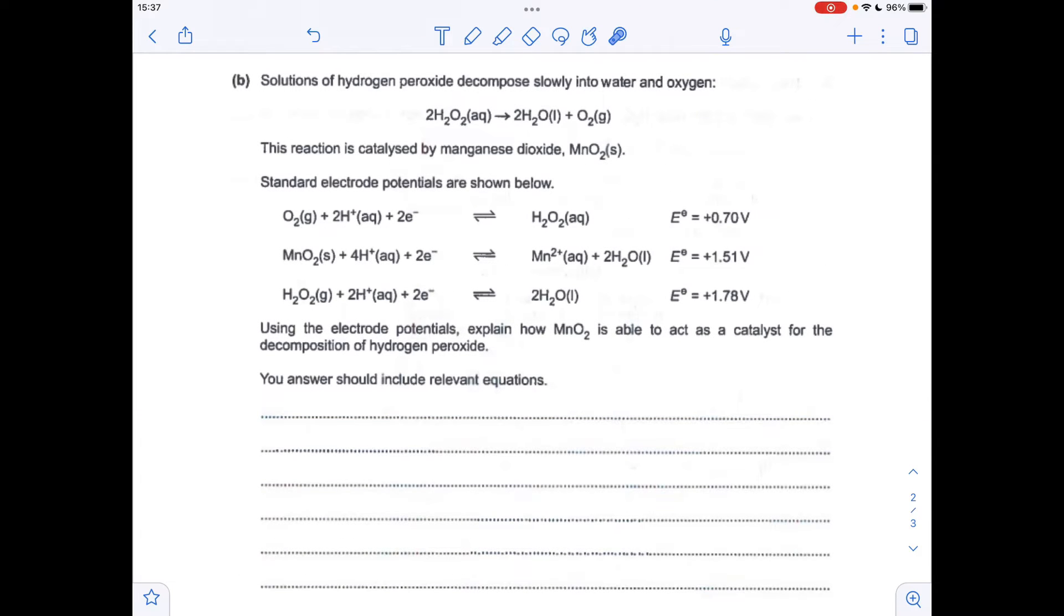Part B moves into electropotentials. The first thing I'm going to do is number these equations 1, 2 and 3. We've got to use the electropotential values to explain why MnO₂ is a catalyst for the decomposition of hydrogen peroxide. If you look at equations 2 and 1, the standard electropotential for 2 is more positive than that for 1.